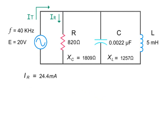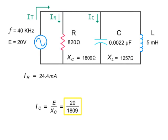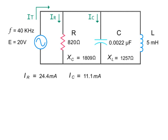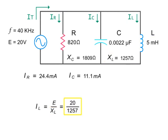To calculate the current through the capacitor, divide the source voltage by the capacitive reactance, or 20 volts divided by 1,809 ohms, which equals 11.1 milliamps. To calculate the current through the inductor, divide the source voltage by the inductive reactance, or 20 volts divided by 1,257 ohms, which equals 15.9 milliamps.